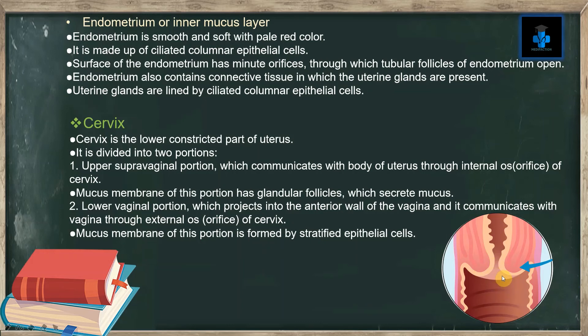The cervix is the lowest constricted part of the uterus. It is divided into two portions. The first is the upper supravaginal portion, which communicates with the body of the uterus through the internal os or orifice of the cervix. The mucous membrane of this portion has glandular follicles which secrete mucus.